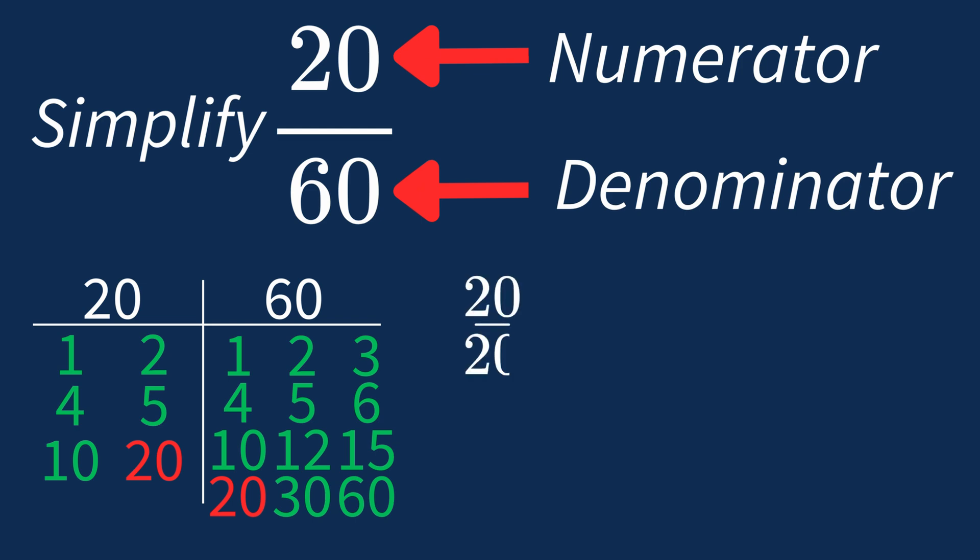Dividing the numerator 20 by 20 gives us 1. Dividing the denominator 60 by 20 gives us 3. So after dividing, the simplified fraction is 1 over 3.